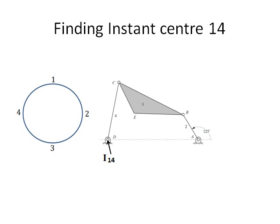We inspect the linkage. We can see that at D, link 4 connects to the frame. The pin is fixed to the frame and therefore there is 0 velocity at D. We have found an instant center. We label it I14 to represent the location of the instant center. Going back to the circle diagram, we can draw a line between 1 and 4 to represent this instant center.